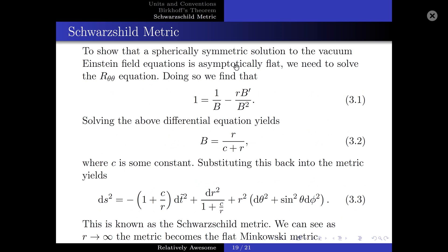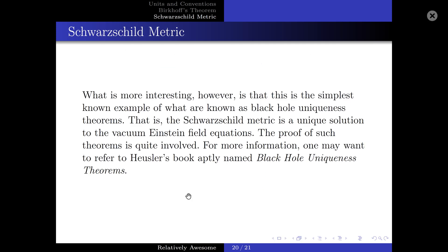To show that a spherically symmetric solution to the vacuum Einstein field equation is asymptotically flat, we need to solve the R-theta-theta component. We aim to obtain a differential equation whose solution yields a result in terms of the radial component R and a constant of integration C. Substituting this back into the metric, we yield the Schwarzschild metric. As R approaches infinity, the metric becomes Minkowski flat. More interestingly, this is the simplest known example of what are known as black hole uniqueness theorems.